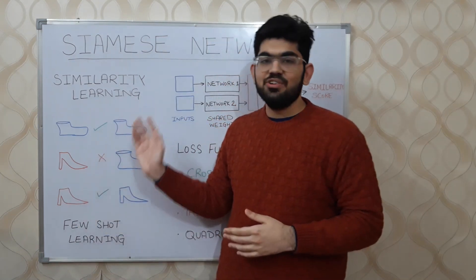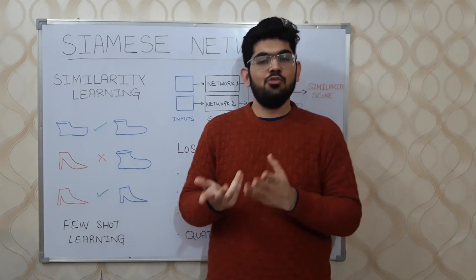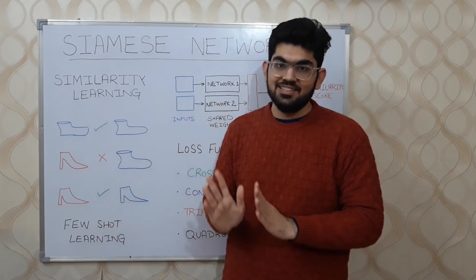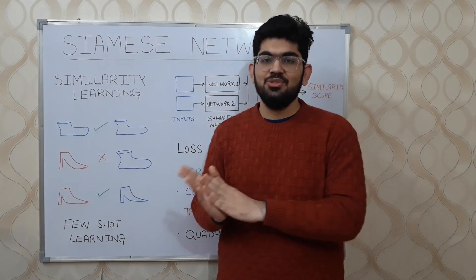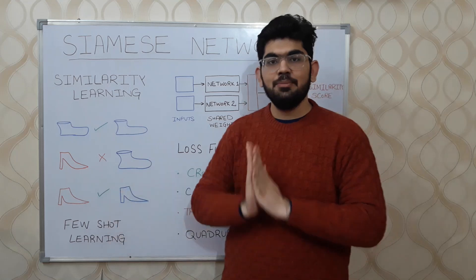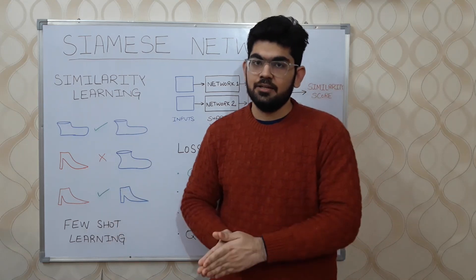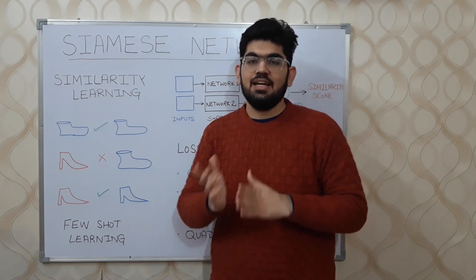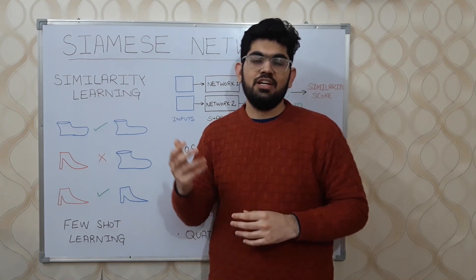One such example can be seen here. We have two different types of shoes which are of different colors. These two shoes are pretty similar to each other, while these two shoes are not that similar. However, this last pair of shoes are similar to each other — the only difference between them is in their color. Hence, the task of similarity learning is to develop applications that can tell how much similarity exists between two different objects.